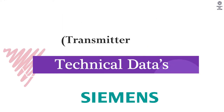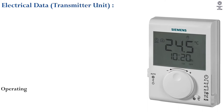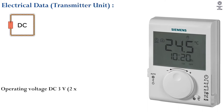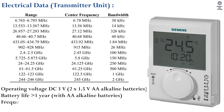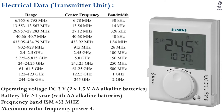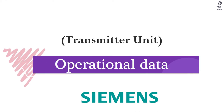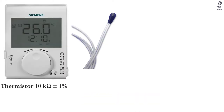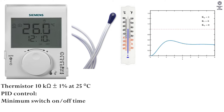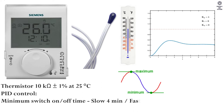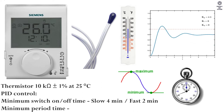Technical data for the transmitter unit. Electrical data: operating voltage is DC 3V using two 1.5V AA alkaline batteries. Battery life is greater than one year. Frequency band is ISM 433 MHz; maximum radio frequency power is 4.19 dBm. Operational data: thermistor is 10 kΩ A ±1% at 25°C. PID control. Minimum switch on/off time: slow is 4 minutes, fast is 2 minutes.